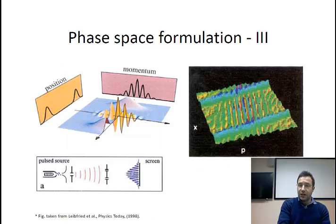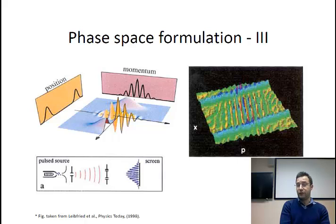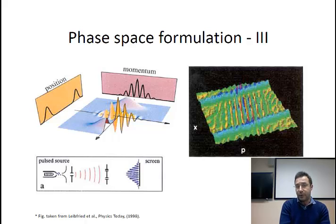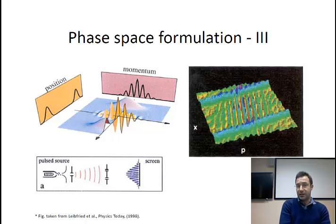The very interesting thing is that nowadays experimental techniques exist which allow the measurement of quasi-distribution functions. As a matter of fact, not only can you measure these Wigner functions, you can even find the negative peaks — which is something rather interesting. So this means that the language of the phase-space or Wigner formulation is extremely close and strongly connected to experiments.